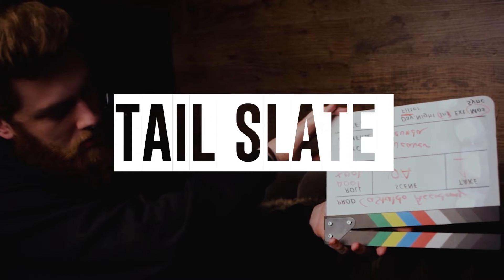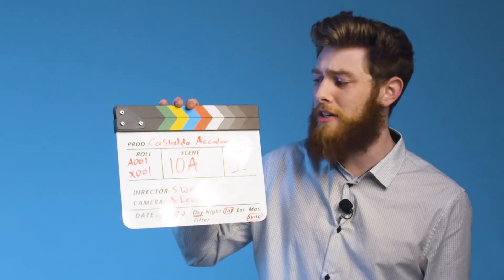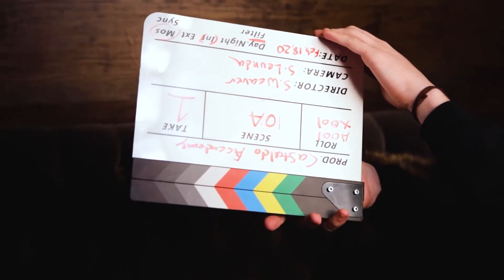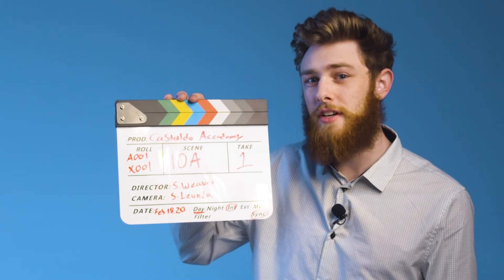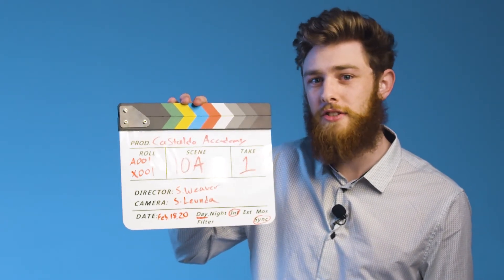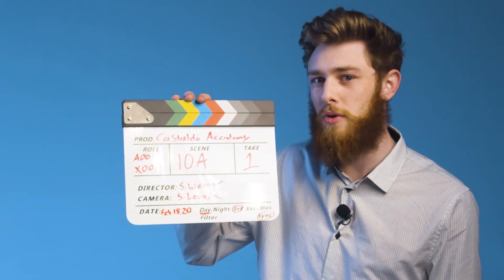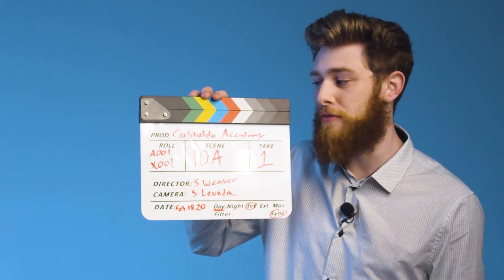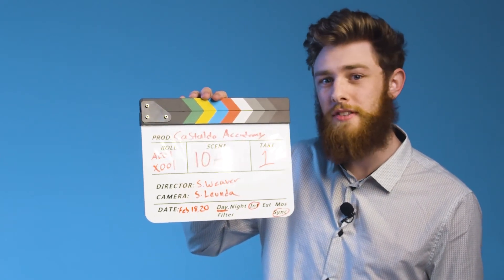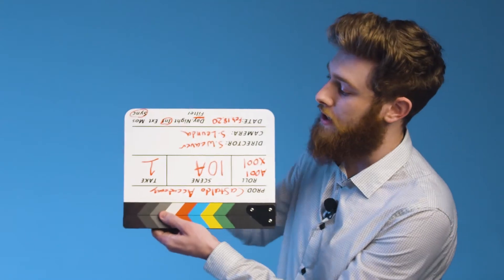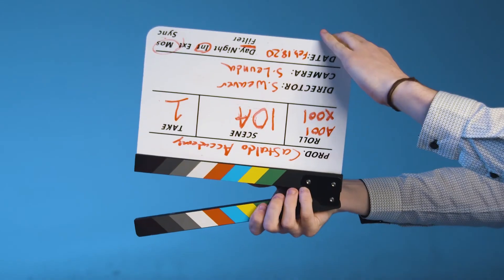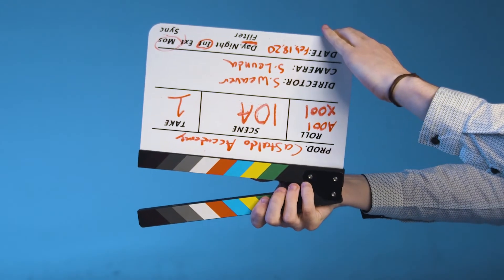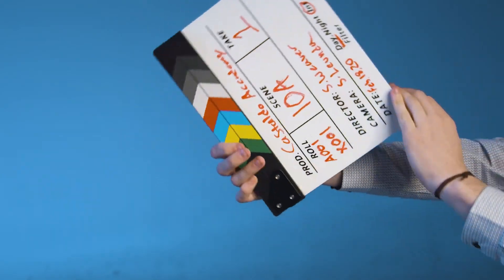Next, let's talk about tail slating. In some situations, you're not going to be able to slate at the beginning of the scene and you're going to have to do it at the end. In that situation, after the director calls cut, you're going to want to yell out 'tail slate' so that no one stops recording. Then hop into the camera frame, make sure everything's in focus, flip your board upside down, and say your mark: 'Scene 10 alpha take one, mark,' and flip it back up.